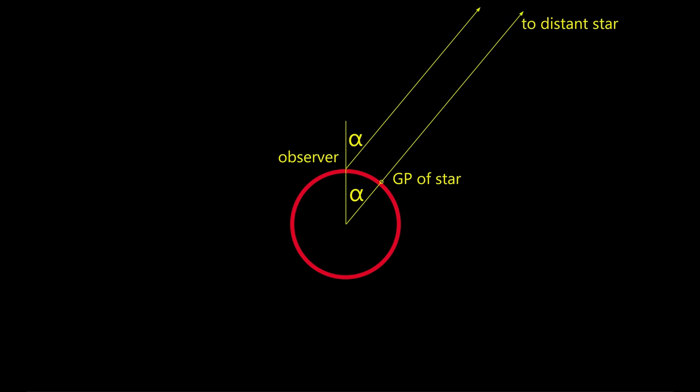Since the measured zenith angle is equal to the zenith angle between the center of the earth and the GP of the star, the distance from the observer to the GP of the star is the zenith angle times 2 times pi times the radius of the earth divided by 360. This happens to be 60 nautical miles per degree of the zenith angle.